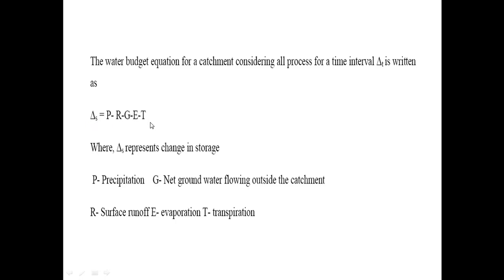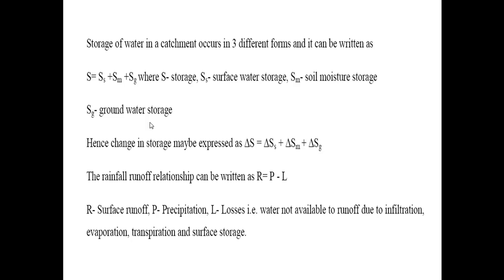In this equation, P is net precipitation, R is surface runoff, G is net groundwater flowing outside the catchment area, E is evaporation, and T is transpiration. Delta S represents the change in storage. The water storage in any catchment occurs in three different forms, written as S equals Ss plus Sm plus Sg. Here S is total storage, Ss is surface water storage, Sm is soil moisture storage, and Sg is groundwater storage.